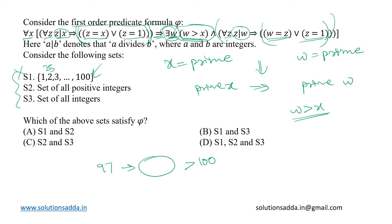But checking for set S2, which is a set of all positive integers, here we can definitely find a greater prime number for any given number because this set is infinite—it is countably infinite—so for any given number we can definitely find a greater number which is also prime.